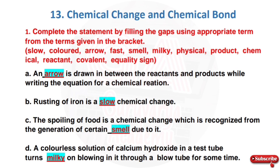First, an arrow is drawn in between the reactants and products while writing the equation for a chemical reaction. Second, the rusting of iron is a slow chemical change. Third, the spoiling of food is a chemical change which is recognized from the generation of a certain smell. Fourth, the colourless solution of calcium hydroxide in a test tube turns milky on blowing into it through a blow tube for some time.